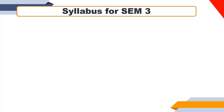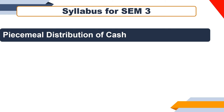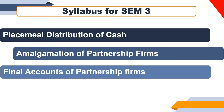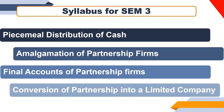First, let us see the syllabus for Semester 3. Chapter 1 is Piecemeal Distribution of Cash. Chapter 2 is Amalgamation of Partnership Firms. Chapter 3 is Final Accounts of Partnership Firms. Chapter 4 is Conversion of Partnership into a Limited Company. These four chapters are related to your SYBCOM Semester 3. You also have a theory chapter, but practical questions will be expected from these four chapters.